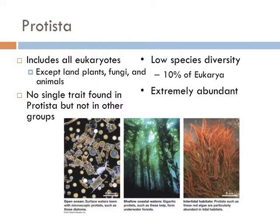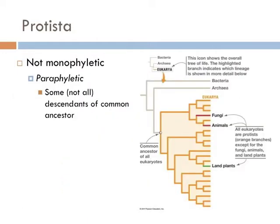Other protists are responsible for a range of serious human diseases such as malaria and sleeping sickness. Even though they are extremely abundant, they have relatively low species diversity, occupying only about 10% of all the eukaryotes. Unlike bacteria and archaea, protists are not monophyletic — they are actually paraphyletic.